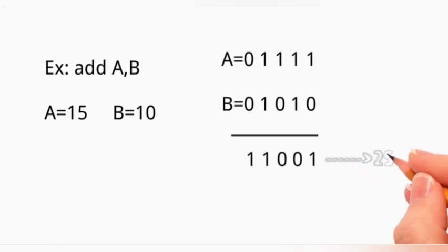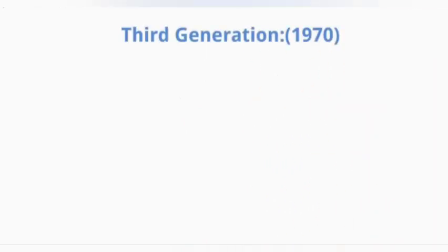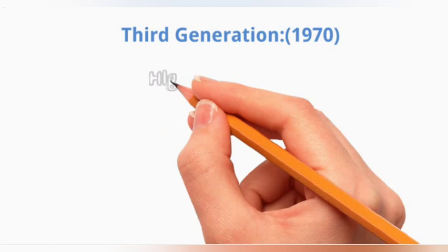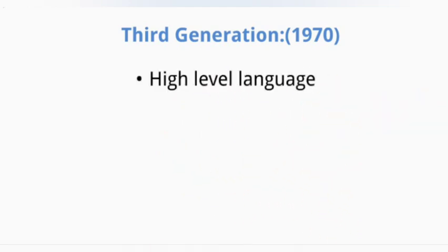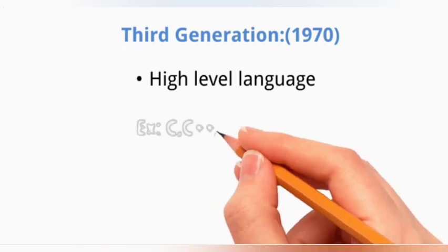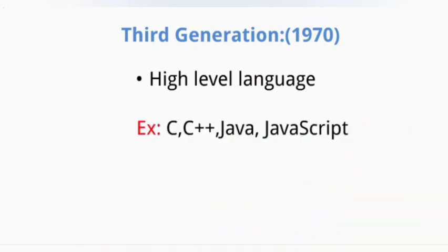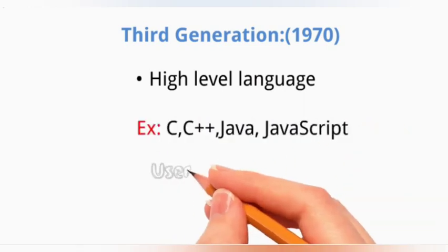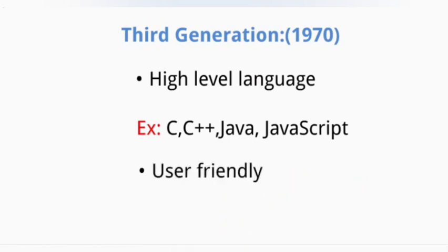Third generation language was introduced in 1970 in order to increase comfort for programmers and users. This is a high-level language, also called human understanding language. Examples: C, C++, Java, JavaScript. This is user-friendly language because it helps to identify errors easily.